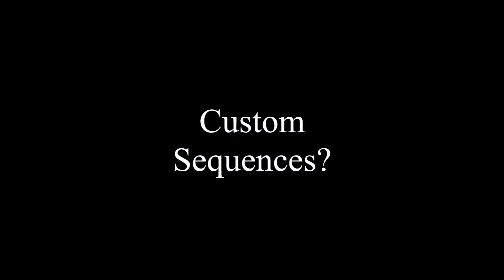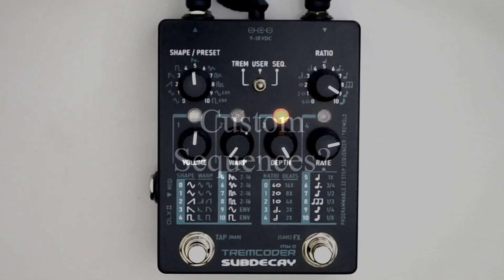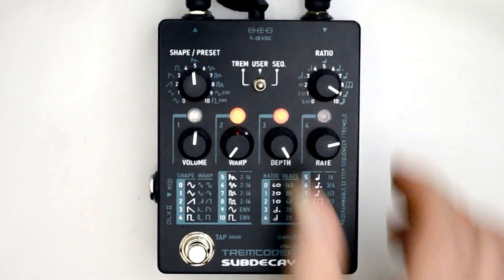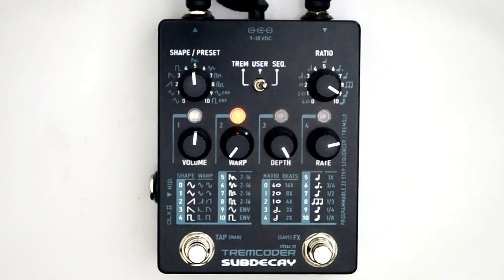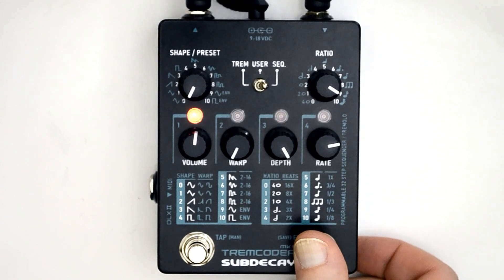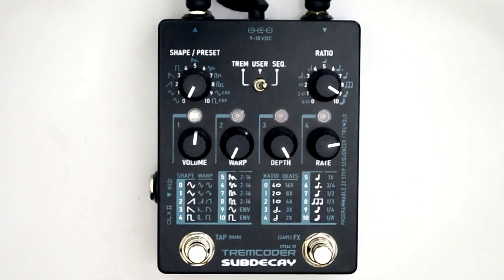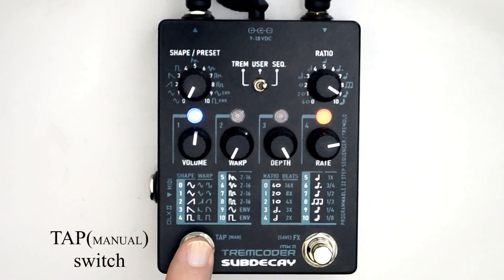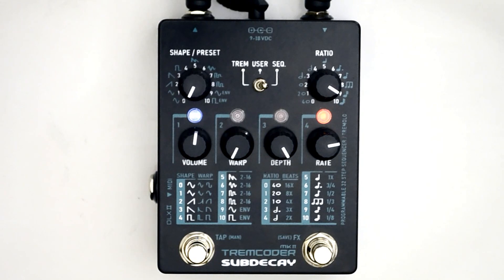But what if you want to create a custom sequence? First, set the toggle back to sequence. Hold down the FX Switch as if you were going to save a preset. Instead of saving with the FX Switch, press the tap switch instead. You're now in custom sequence setup.